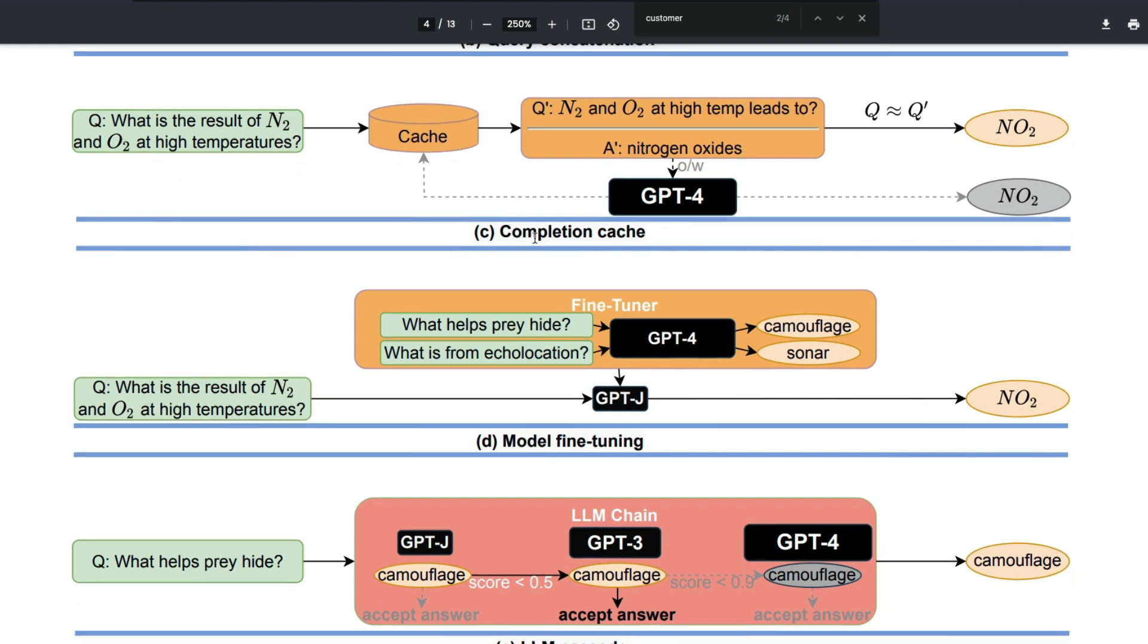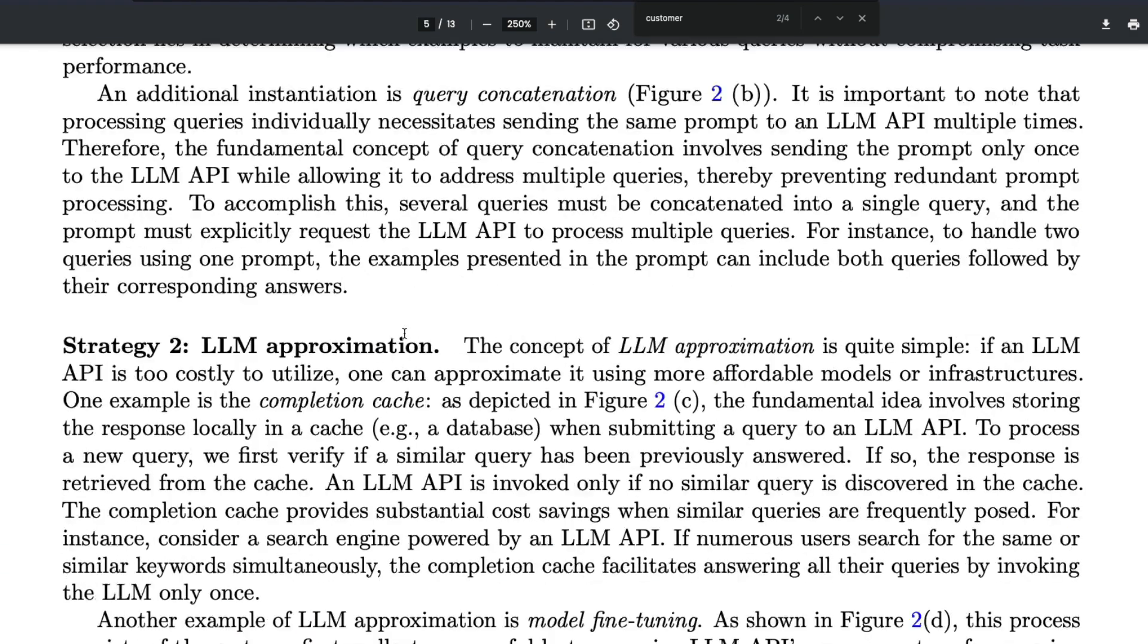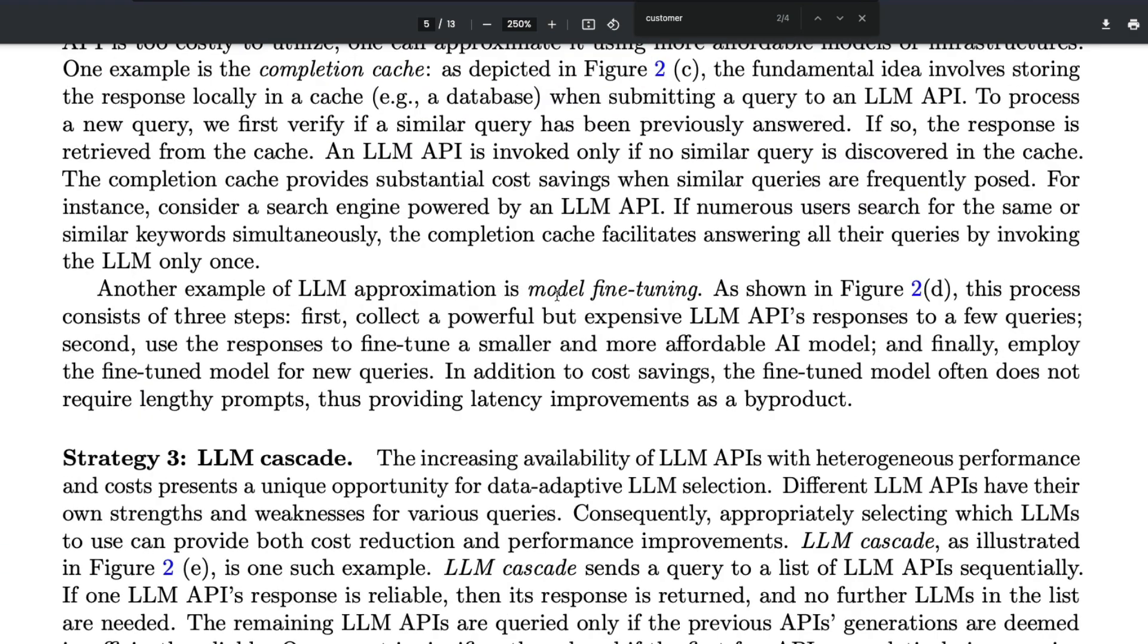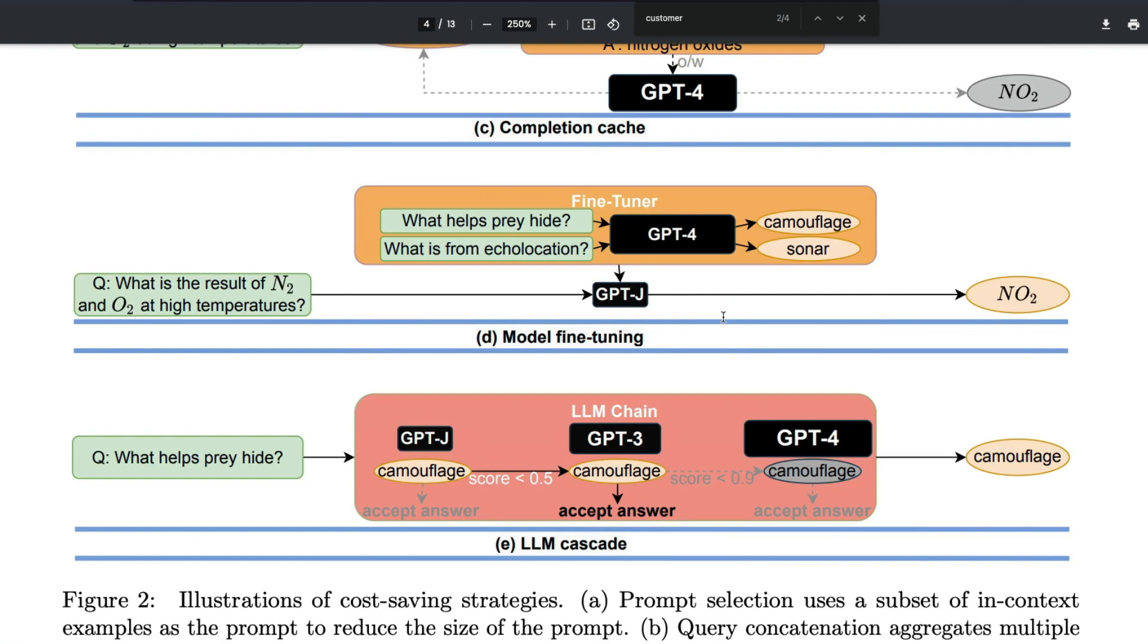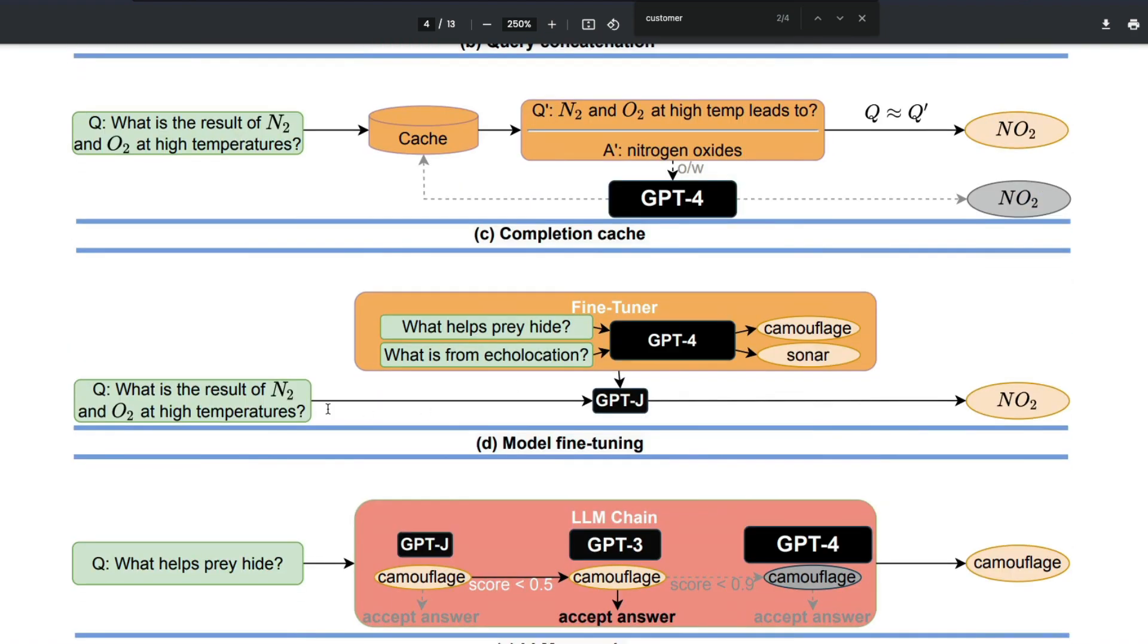What else you can do in terms of LLM approximation is model fine-tuning. What you can do is the first time, take the question and send it to an expensive model. But when you get the response, you can now fine-tune a smaller model and then make that model answer the question. This way, the next time you don't have to use the expensive large language model like GPT-4; rather, you can use a slightly cheaper version like GPT-J. These days you have got a lot more models like Stable LM, Open LLaMA, MPT, and a lot of other models available for you to do this fine-tuning part.